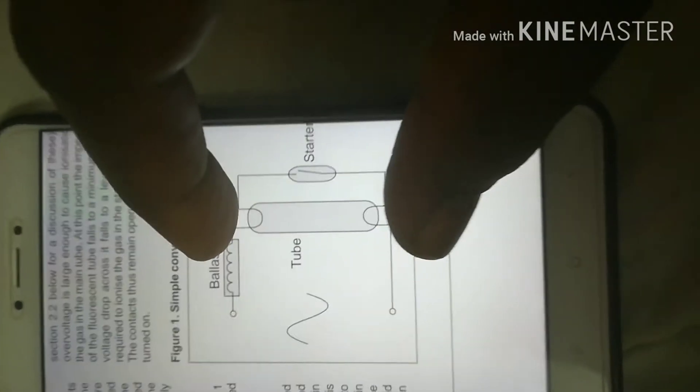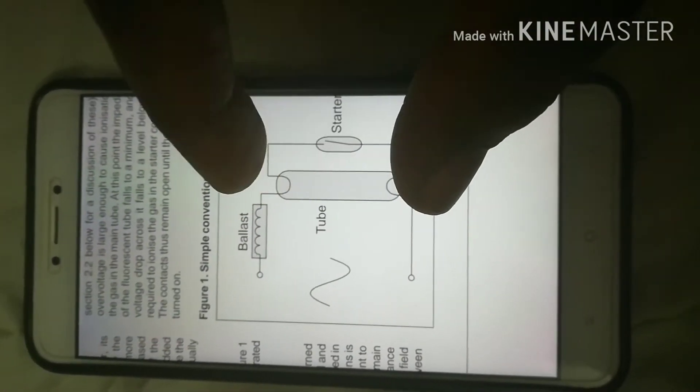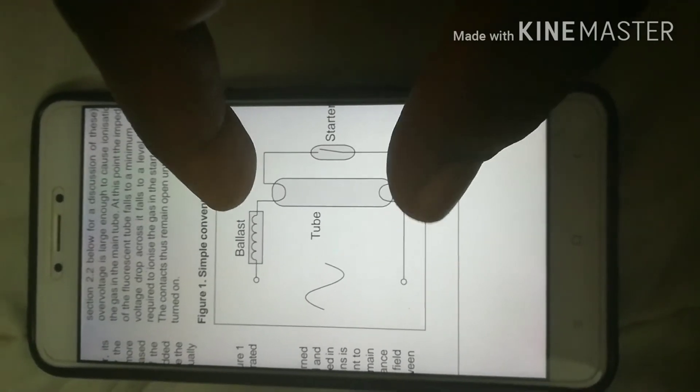So once this gas gets ionized, this will conduct electricity to pass through it, which will make the lamp glow.